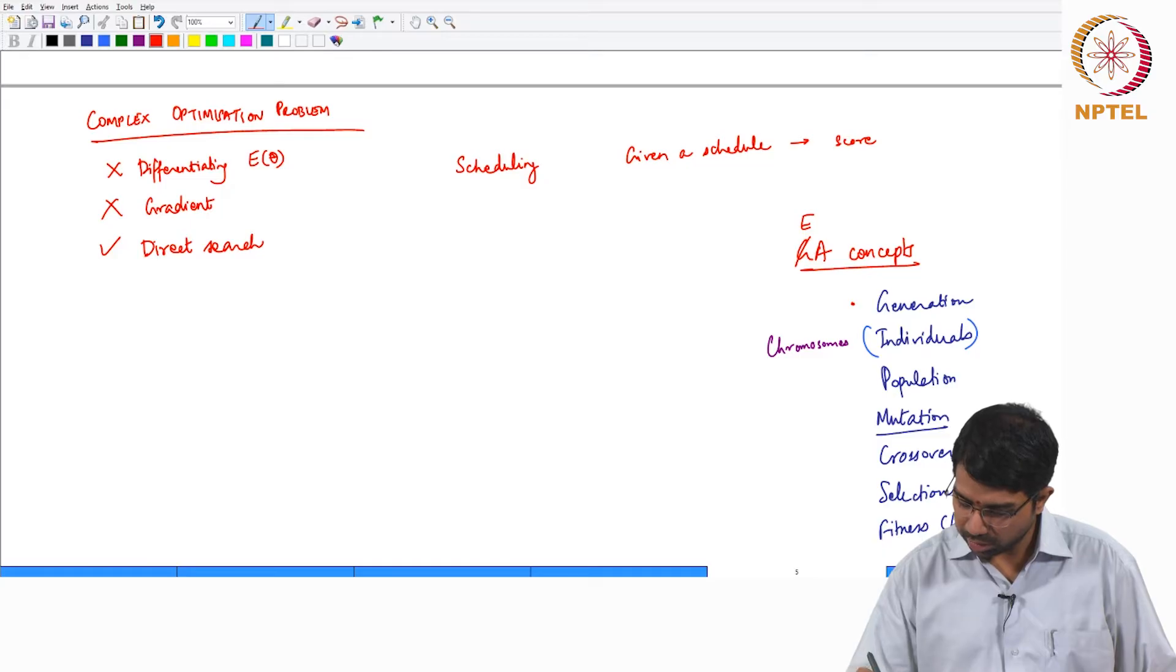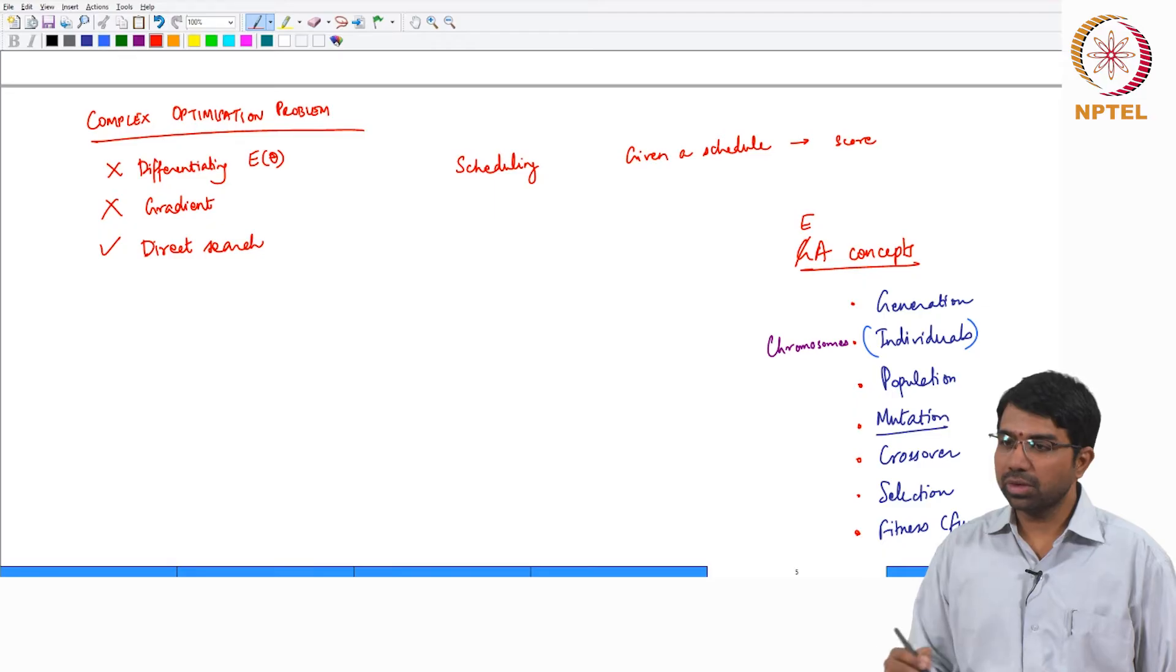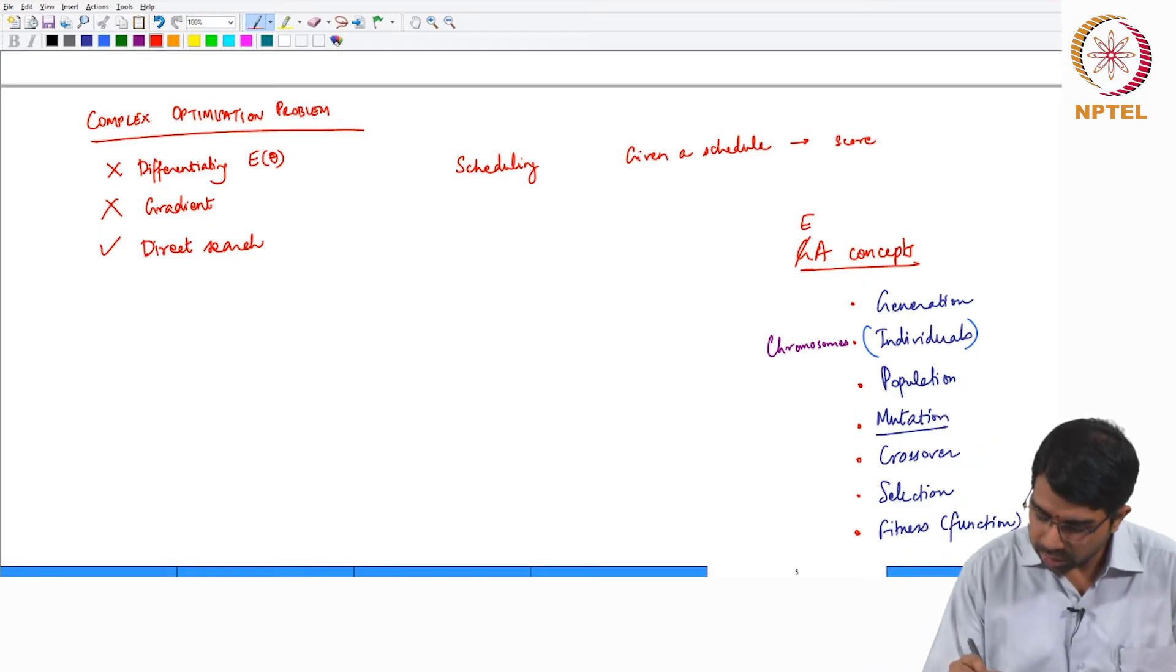What is a generation? What is an individual or a chromosome? What is a population? What is a mutation? How do you do crossovers? How do you do selection? How do you compute fitness? You need a method for each of these things.